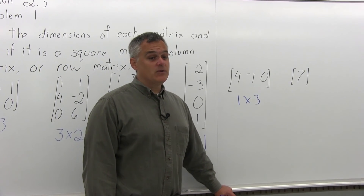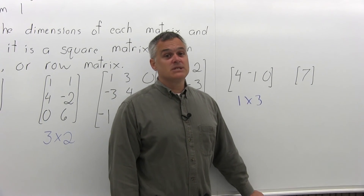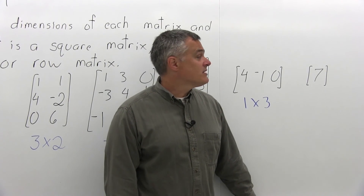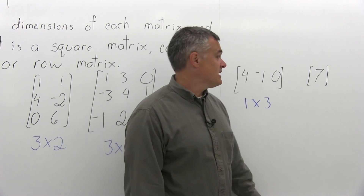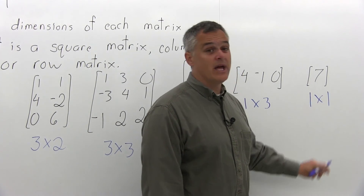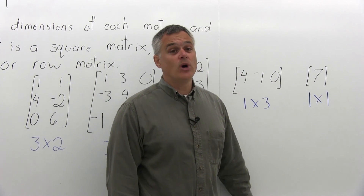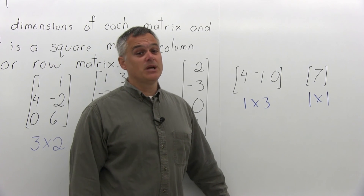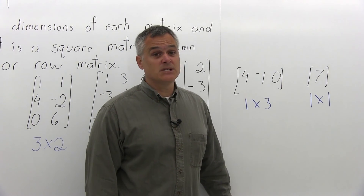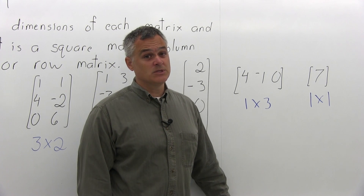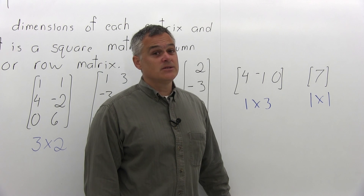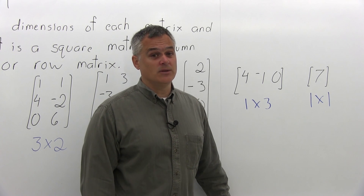Finally, one more matrix — it's a matrix with just the single entry, 7. The dimensions are 1 by 1: it has 1 row and 1 column. This makes it a square matrix, a row matrix, and a column matrix. It is a square matrix because it has the same number of rows as columns; a row matrix because it has only 1 row; and a column matrix because it has only 1 column.